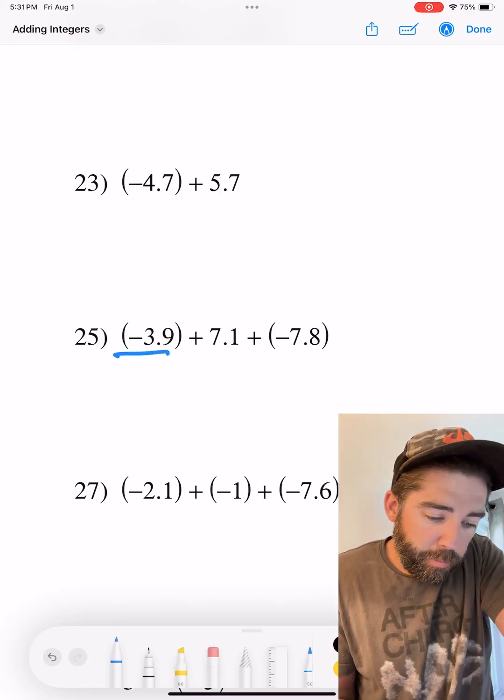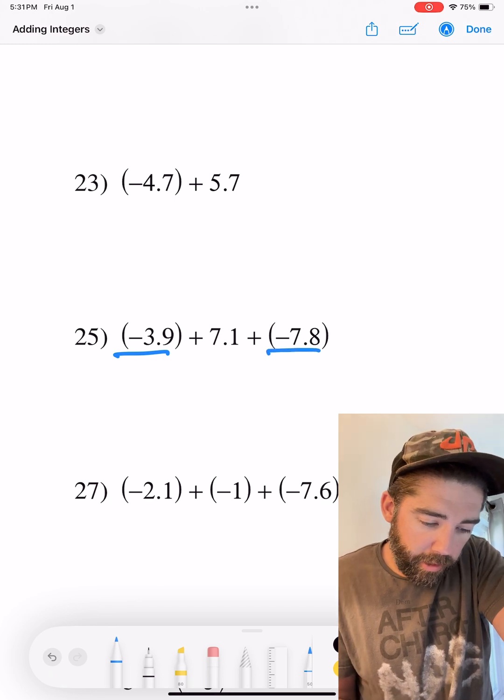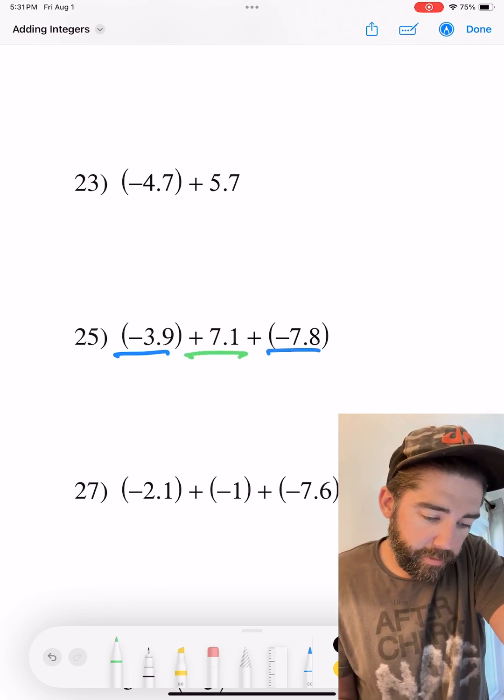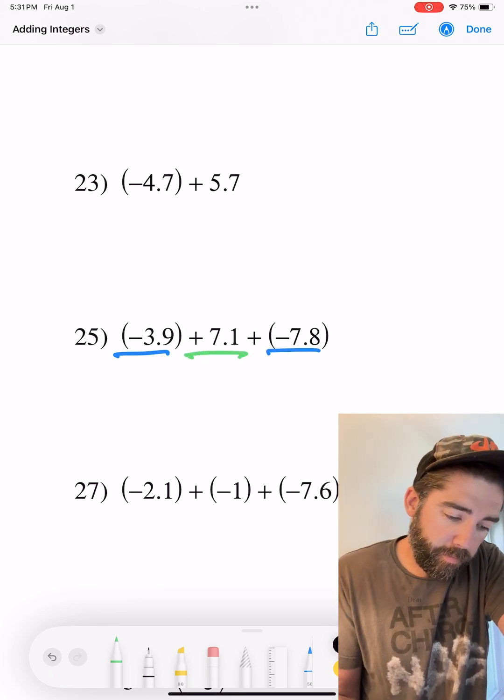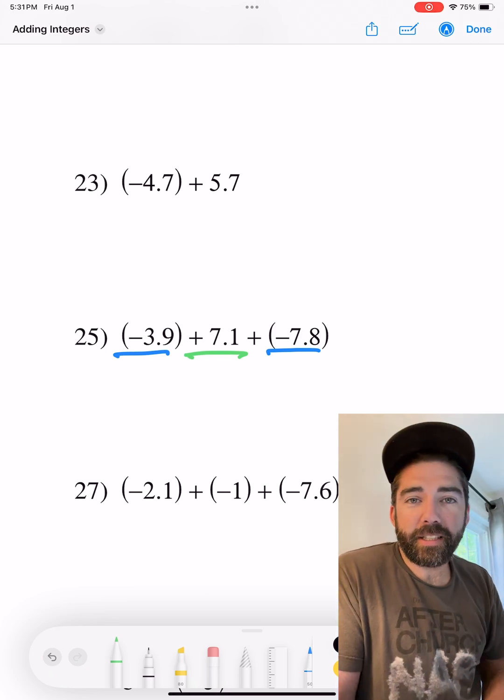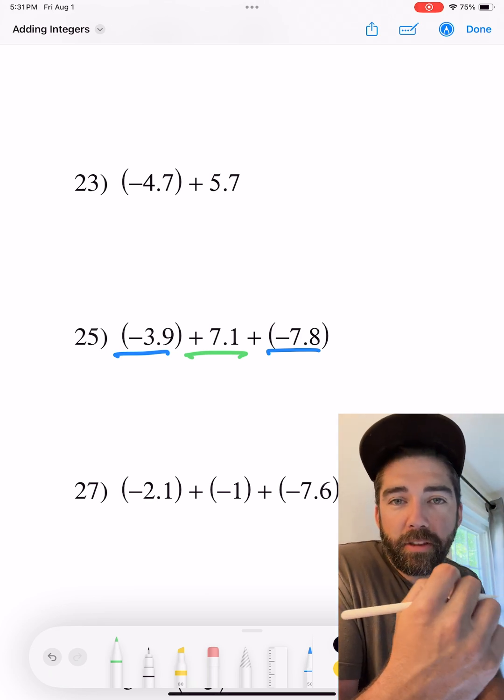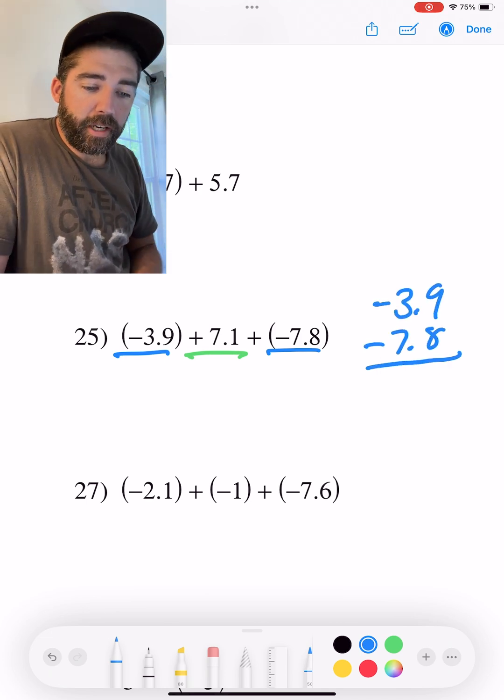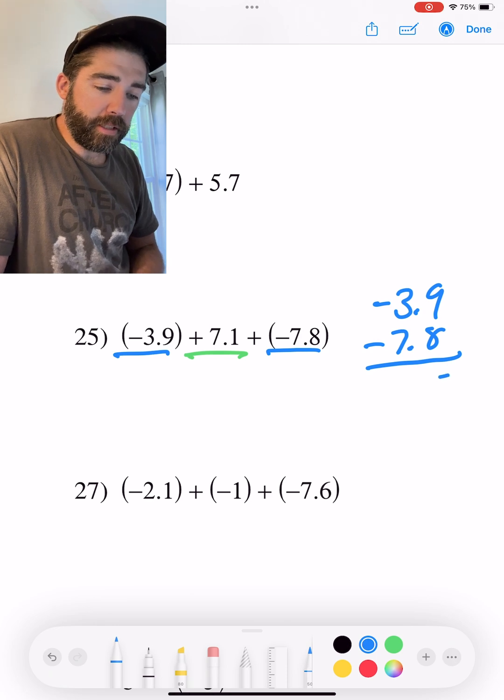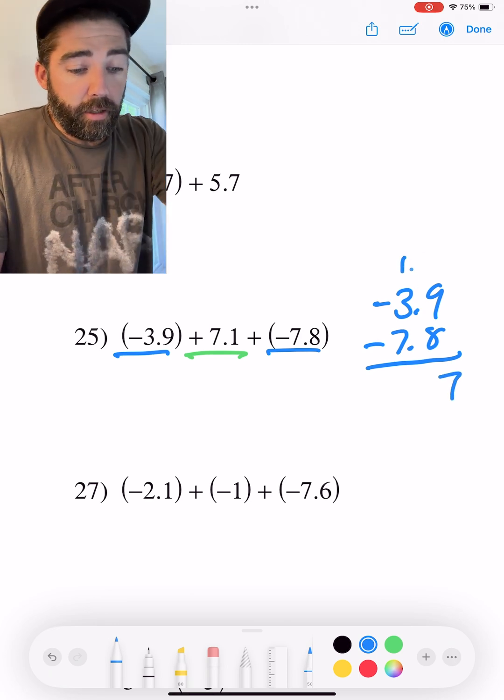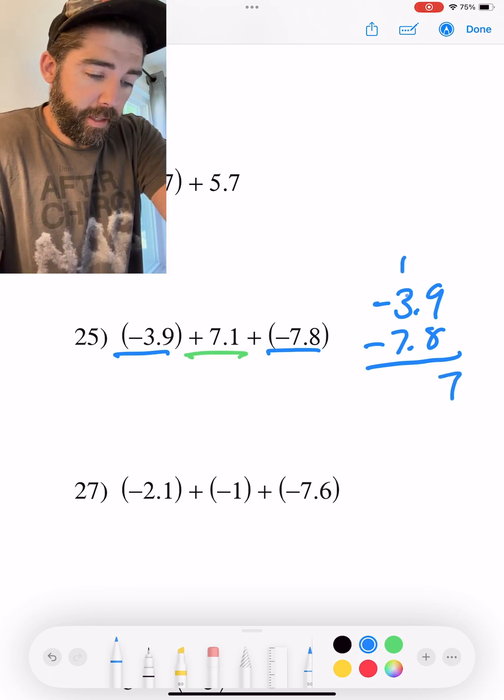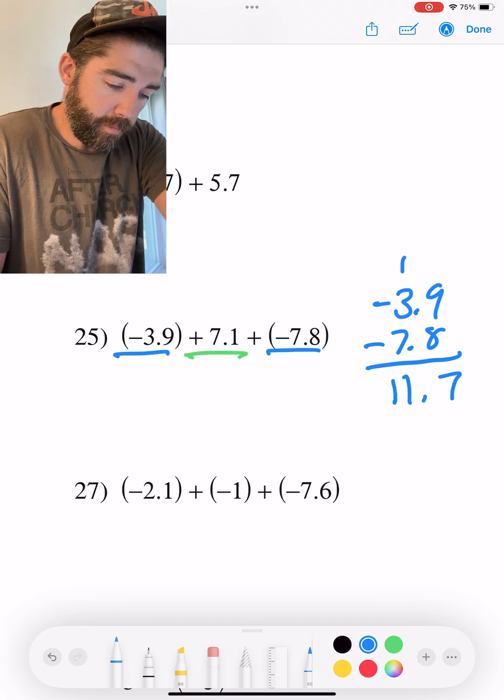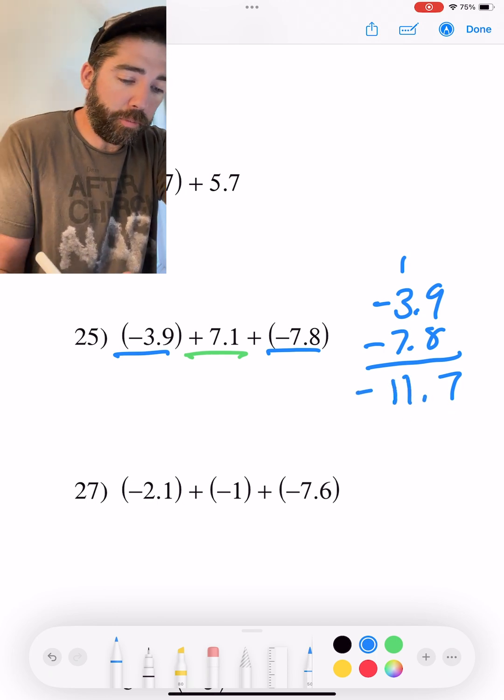All right. We have negative 3.9, negative 7.8, and a positive 7.1. So let's add the ones together that are the same. We have negative 3.9, negative 7.8. We're going to bring those together. 9 and 7 together make 17. Carry the 1. That's 11. So we have negative 11.7.